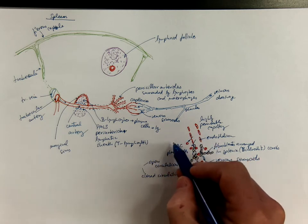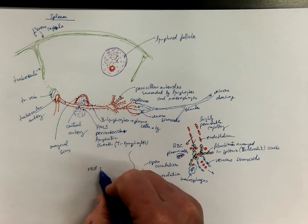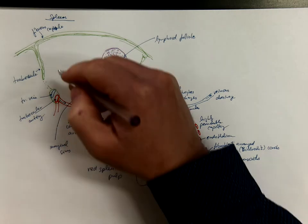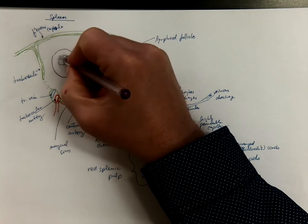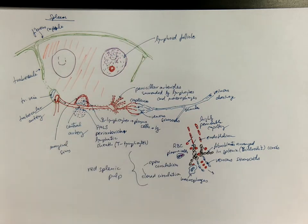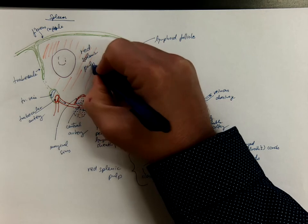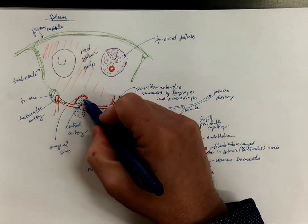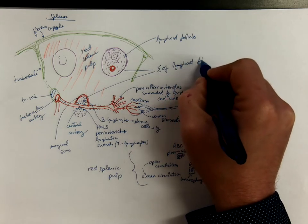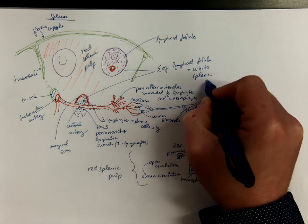This whole complex is called the red splenic pulp, which is everywhere among the follicles. And the sum of the lymphoid follicles is called the white splenic pulp.